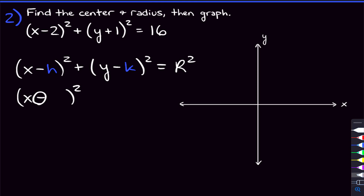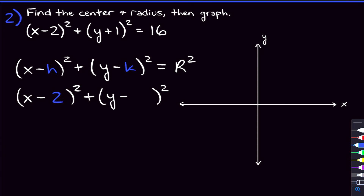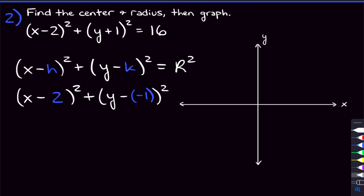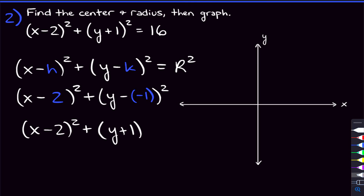Here's why the signs flip. The x and the minus are already in the formula as (x minus h). What h do we need to plug in to get x minus 2? We need to replace h with positive 2. For the y term, we want y plus 1, so we need to plug in negative 1 for k. So we get (x minus 2) squared from plugging in positive 2, and (y plus 1) squared from the two negatives making a positive. That's why the sign flips.